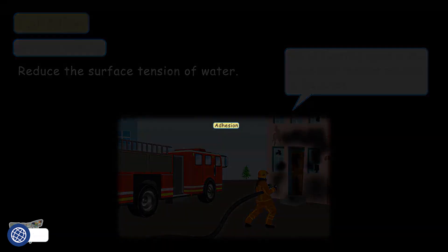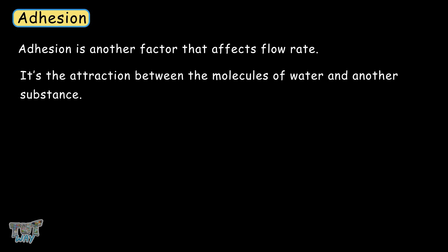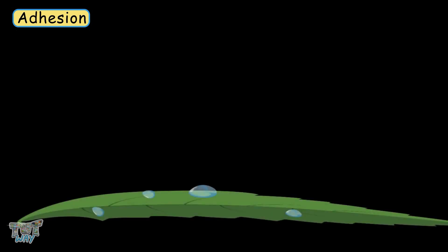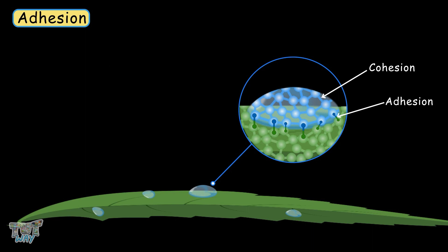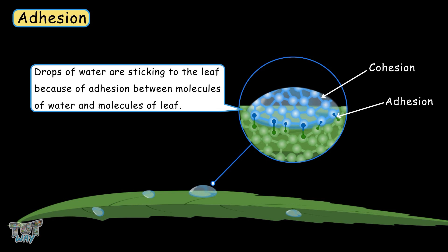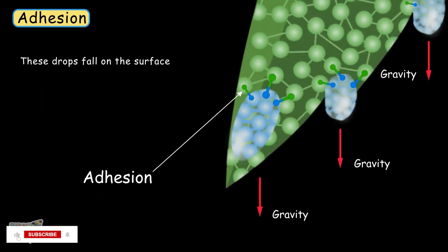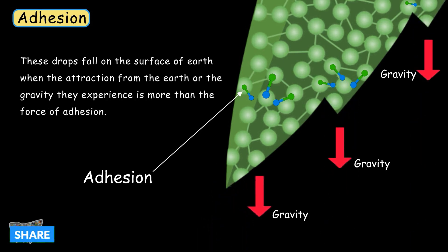Now let's learn about adhesion. Adhesion is another factor that affects flow rate. It is the attraction between the molecules of water and another substance — for example, water and a leaf. It is adhesion that keeps a drop of water stuck to a leaf. Due to cohesion, the water forms a droplet, and due to adhesion between the water molecules and the leaf molecules, the water sticks to the leaf. These drops fall to the surface of the earth when the attraction from gravity is greater than the force of adhesion.